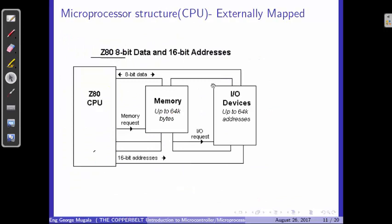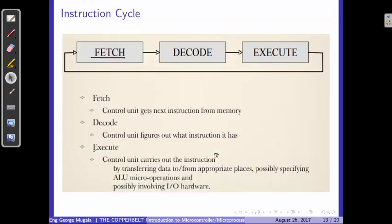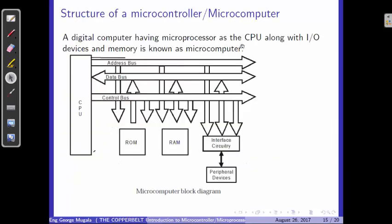We've mentioned that a microprocessor is externally mapped to things like memories as well as input/output devices, and we talked about the instruction cycle. Now let's look at the structure of a microcontroller. The microprocessor is simply the CPU — an IC that contains most of the functions of the central processing unit, including the program counter, instruction registers, and arithmetic logic unit.